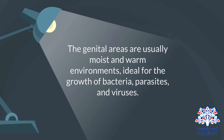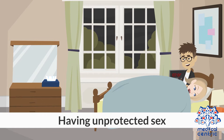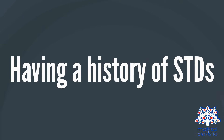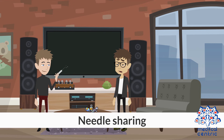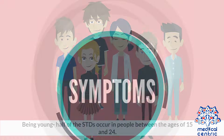The genital areas are usually moist and warm environments, ideal for the growth of bacteria, parasites, and viruses. Factors that may increase the risk of getting an STD include having unprotected sex, having sexual activity with multiple partners, having a history of STDs, needle sharing, and being young — half of all STDs occur in people between the ages of 15 and 24.